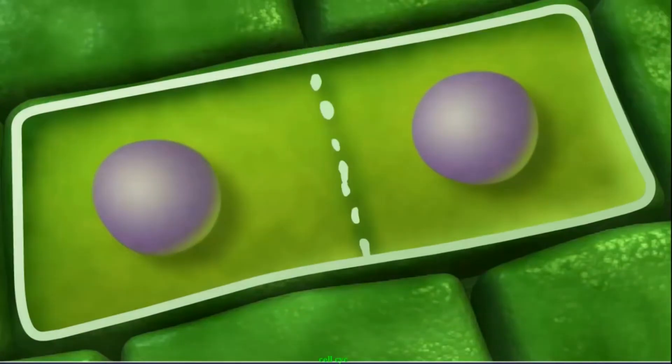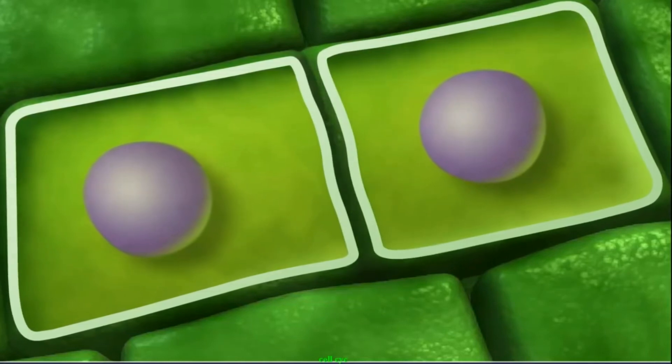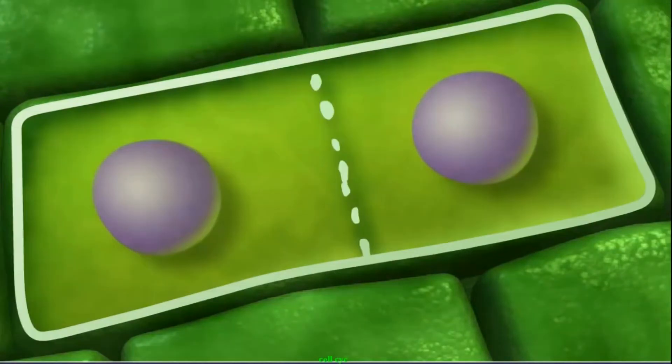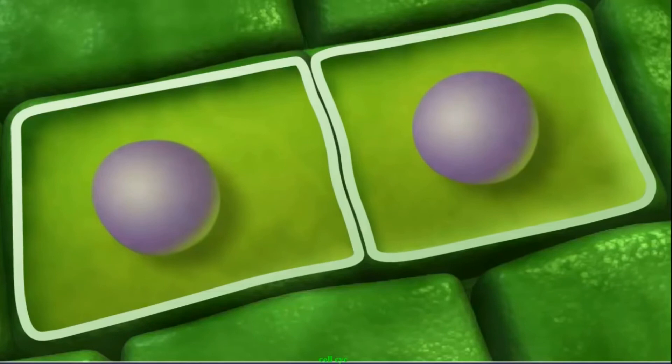The cytoskeleton moves small vesicles containing cell wall material into a line in the middle of the cell. The vesicles fuse together, bringing together the vesicle membrane and the wall material that was inside the vesicle. The vesicle membranes form the new plasma membrane for each cell.